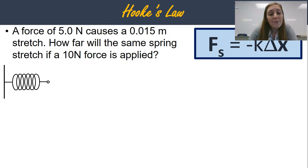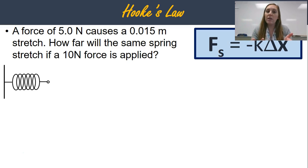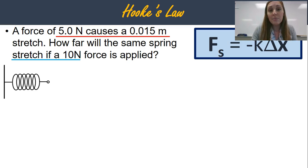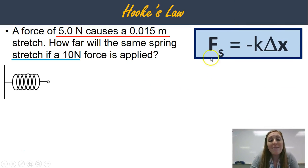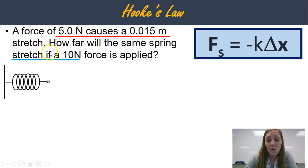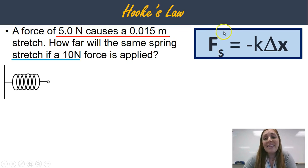Here's another one. A force of 5 newtons causes a 0.15 meter stretch. How far will the same spring stretch if a 10 newton force is applied? The very first thing to notice is there are two scenarios. It's talking about the same spring. In Hooke's equation you have three variables, and you need two of them to solve for the third. In the second scenario I only have one variable, so I need to use the first scenario — the given information — to find the spring constant so that I can plug it into the second scenario and solve for delta x.